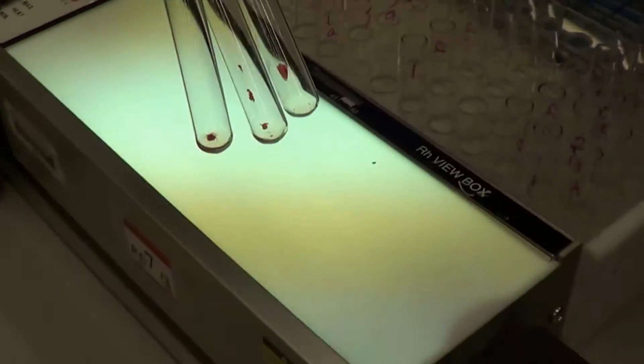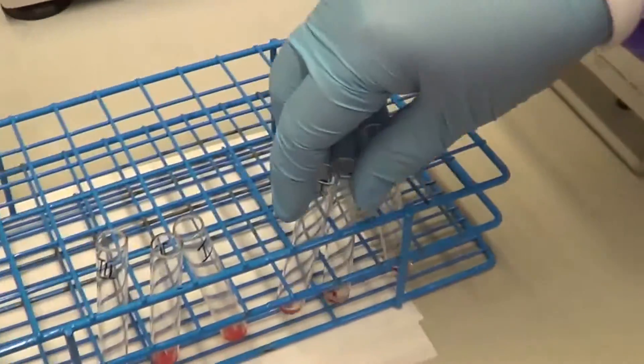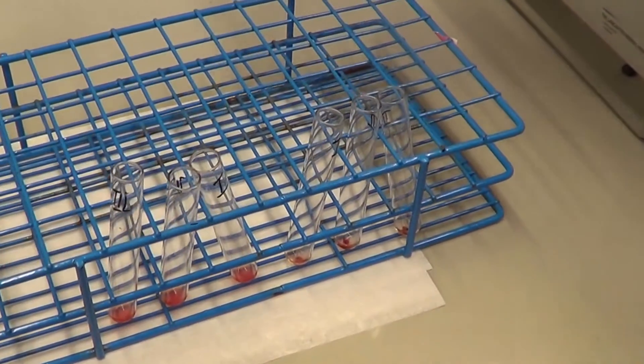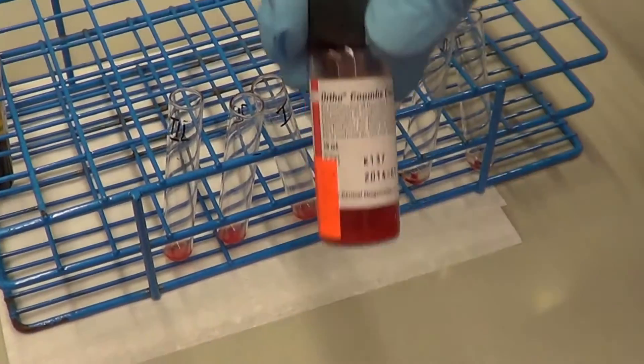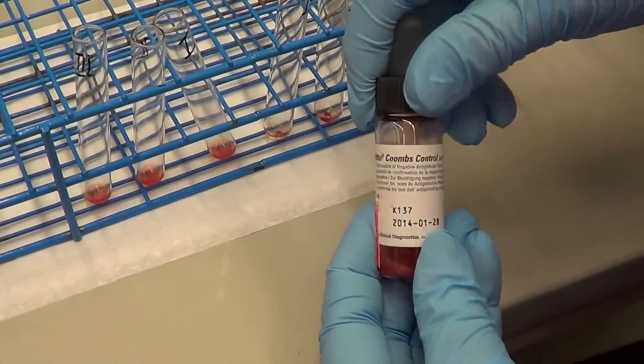With the negative anti-human globulin test, we have to add one drop of our Coombs control cells or check cells. These are O positive cells that are coated with IgG.